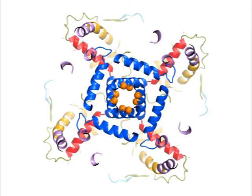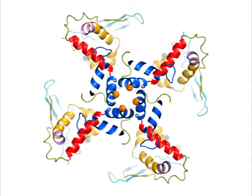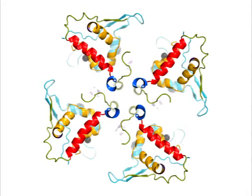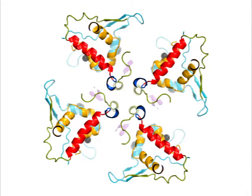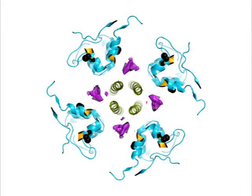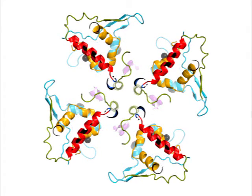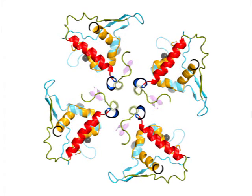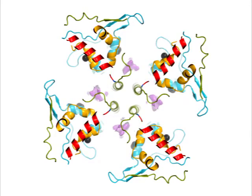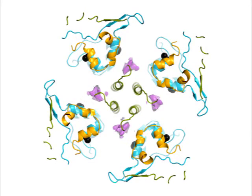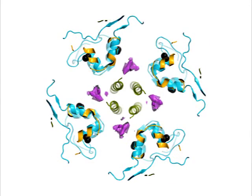We're now exiting the membrane and encountering the TRP-domain helix. Just below is the linker, followed by the ankyrin repeats. Recall that repeat 17 contains the important cysteines. The linker and TRP-domain helix are well-positioned to communicate to the gate whether the cysteines are modified by reactive compounds.